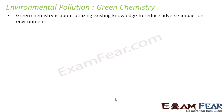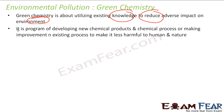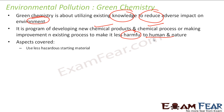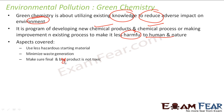Green chemistry is nothing but utilizing existing knowledge to reduce the adverse impact of environmental pollution. It is all about developing new chemical products and processes, or improving existing processes to make them less harmful to humans and nature. The aspects generally covered are: use less harmful starting materials, minimize waste generation, ensure the by-product is not toxic, and if possible, search for more eco-friendly catalysts.